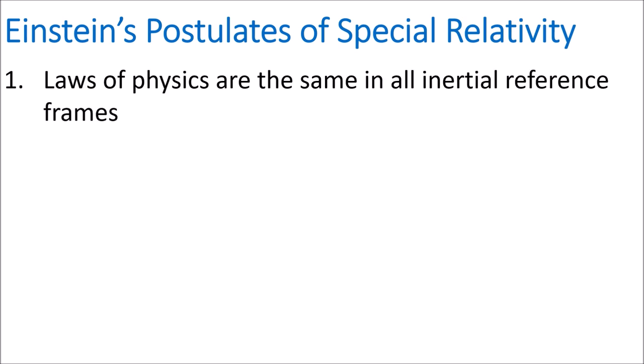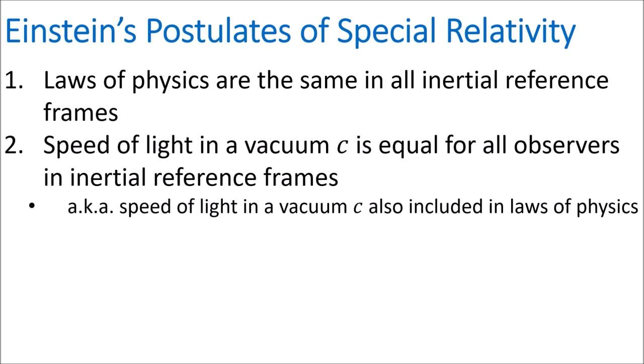And these are just Einstein's two postulates of special relativity. Postulate number one says that the laws of physics are the same in all inertial reference frames. And postulate number two says that the speed of light in a vacuum c is equal for all observers in all inertial reference frames. You could also rephrase this by saying that the speed of light in a vacuum c is included as one of the laws of physics.